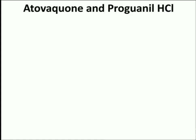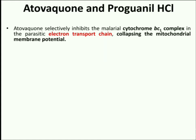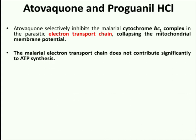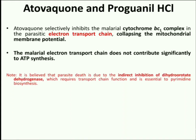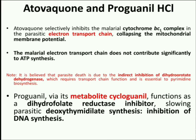The next combination is atovaquone and proguanil hydrochloride. Atovaquone selectively inhibits the malarial cytochrome BC1 complex in the parasitic electron transport chain. The cytochrome BC1 complex is a key component of the mitochondrial respiratory chain of the malaria parasite. Inhibition of the electron transport chain results in collapsing the mitochondrial membrane potential, and thus the malarial electron transport chain does not contribute significantly to ATP synthesis. Proguanil acts via its metabolite cycloguanil. Cycloguanil functions as a dihydrofolate reductase inhibitor, slowing parasitic deoxythymidylate synthesis, which finally results in inhibition of DNA synthesis.